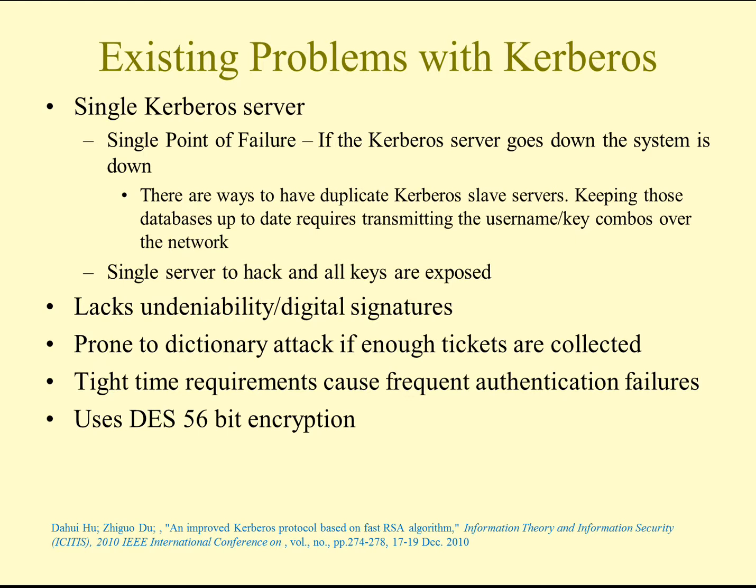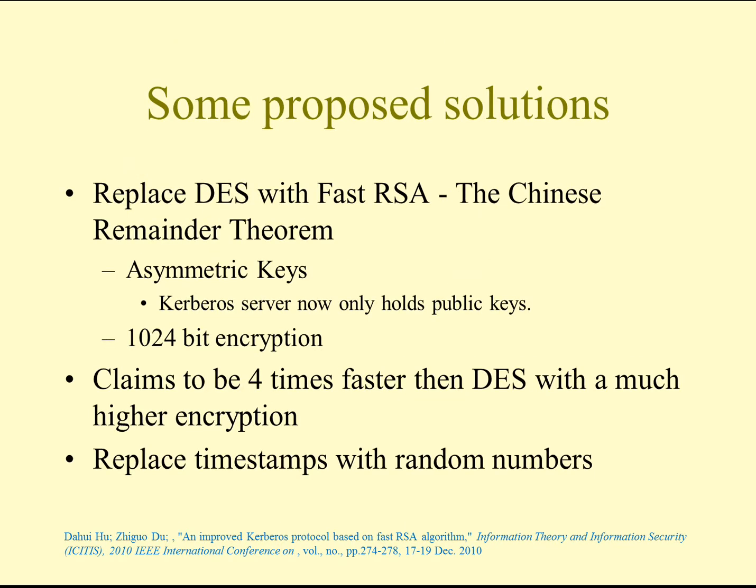Time requirements can cause frequent authentication failures. If the session is set to be very short, then you will have to re-authenticate frequently. Older versions use DES 56-bit encryption, though this can be changed by using Triple DES. Some solutions involve moving up to a form of RSA called fast RSA, which utilizes the Chinese Remainder Theorem. If you haven't covered that theorem, perhaps in a discrete math class, it's an interesting theorem worth knowing.